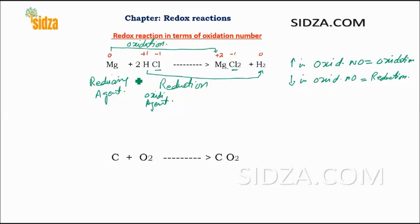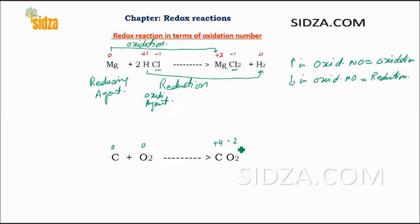Let us take another example. Carbon in the elemental state has an oxidation number of zero, and oxygen in the elemental state is also zero — as we learned in our previous video. In CO2, carbon is in the plus four oxidation state, and oxygen is minus two. So carbon shows an increase in oxidation number from zero to plus four.